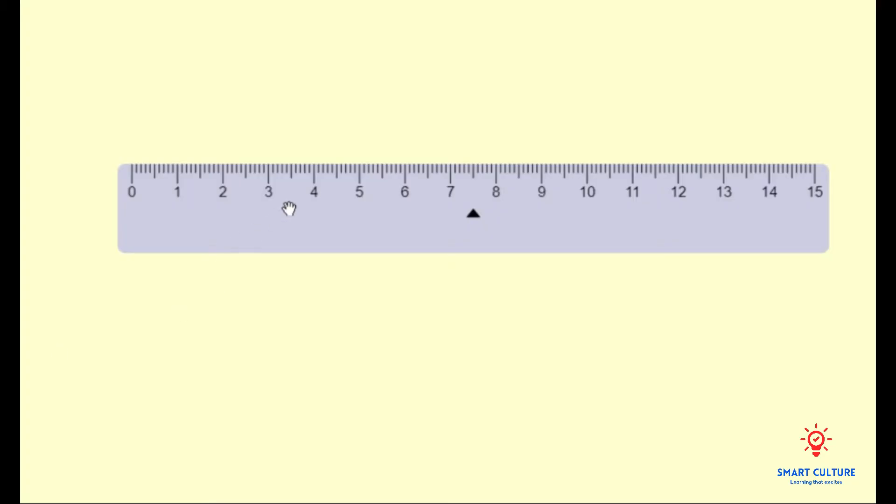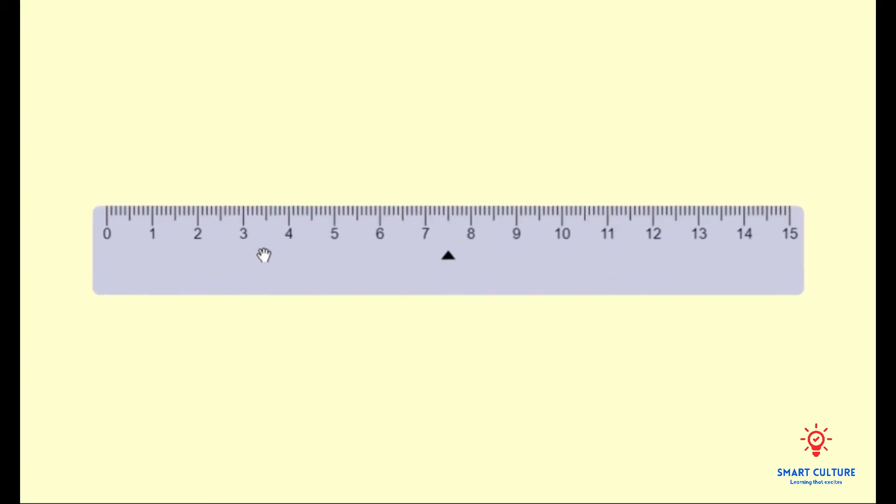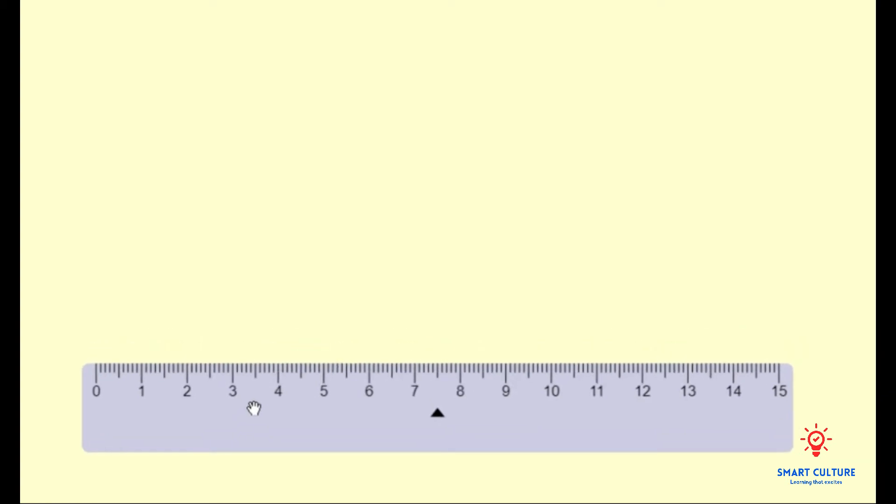The first thing that we have to do is draw one side of the triangle using a ruler. It is often easier to start with the longest side, so let's draw the side of seven centimeters.